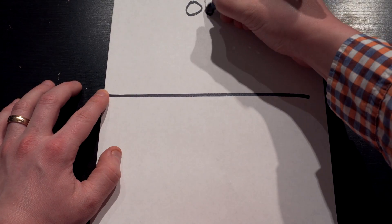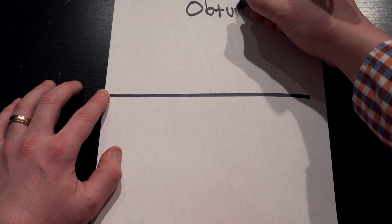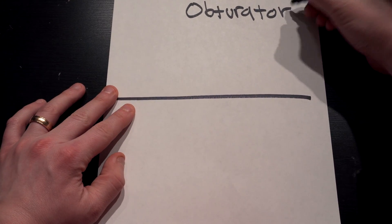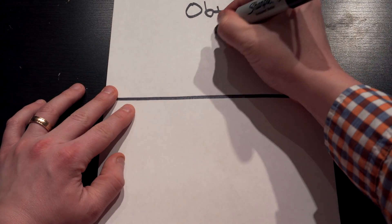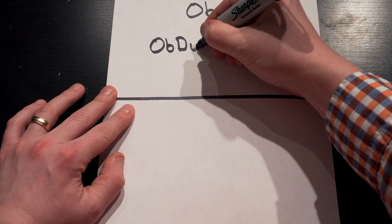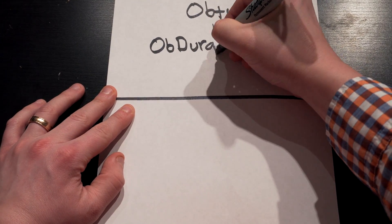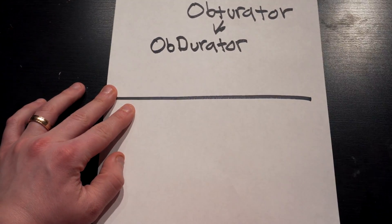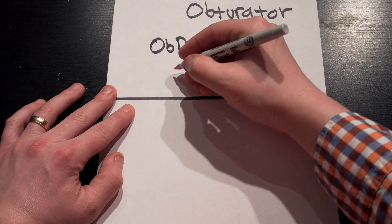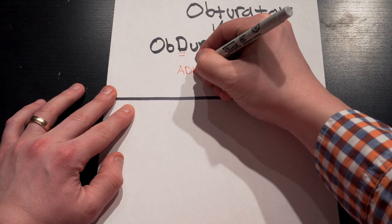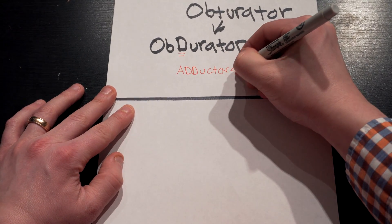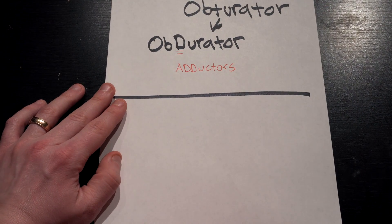Let's move on to the obturator nerve. Remember the only thing we needed to really remember — and again this is high-yield stuff — is obturator. The D in obturator is telling us that these are our adductors of the leg. So if your adductors are out, that's telling you your obturator is out.